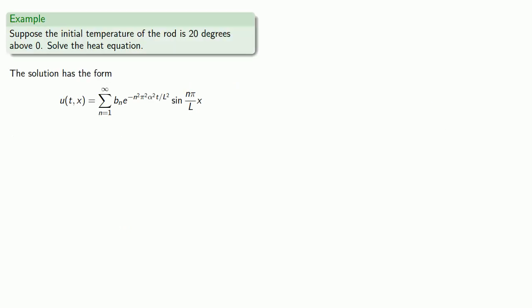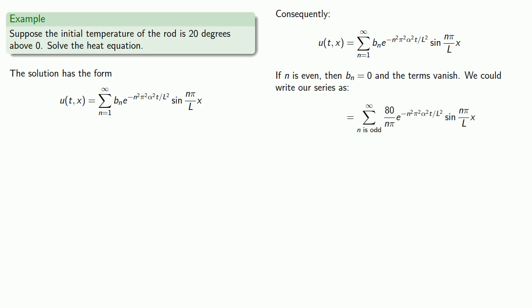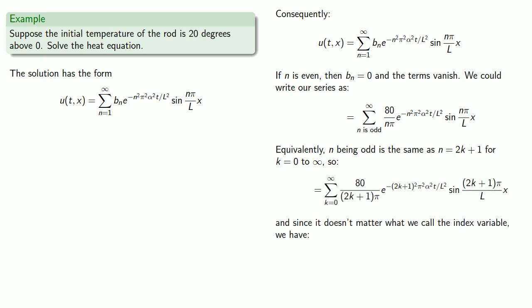Consequently, our function is going to look like the following. If n is even, then bn equals 0 and the terms vanish. That means we could write our series as this series, where n is taken to be an odd number. While this is a perfectly good way of expressing this series, to gain street cred among gangs of rogue mathematicians, you can rewrite it as follows. n being odd is the same as n equals 2k plus 1, for k equals 0 to infinity, so our series can be rewritten. Since it doesn't matter what we call the index variable, we'll call it n and get our final answer.